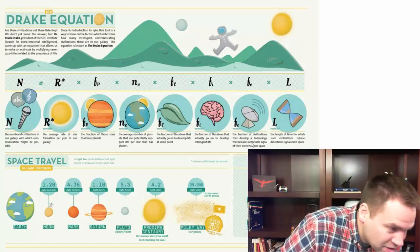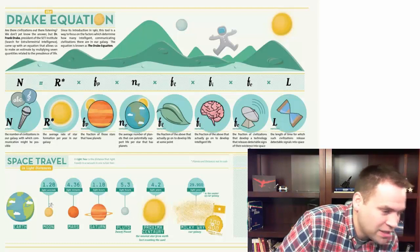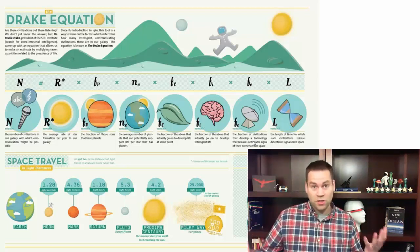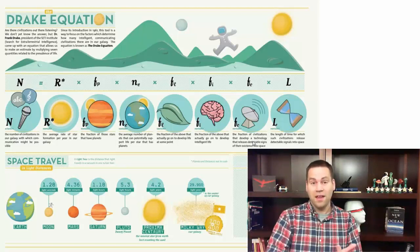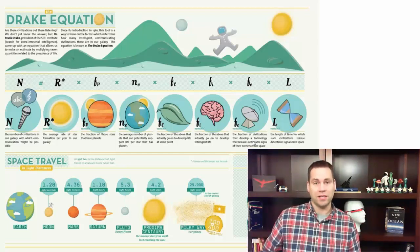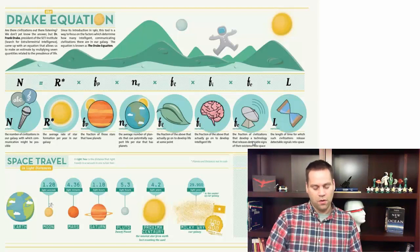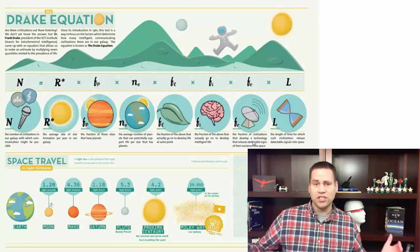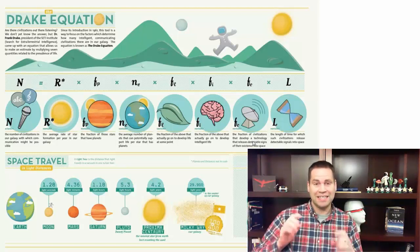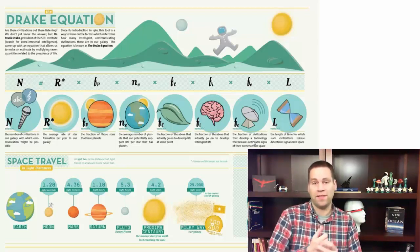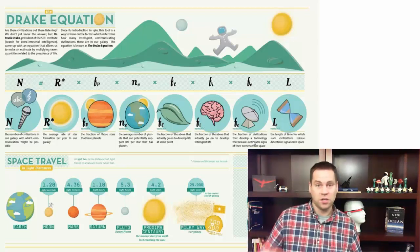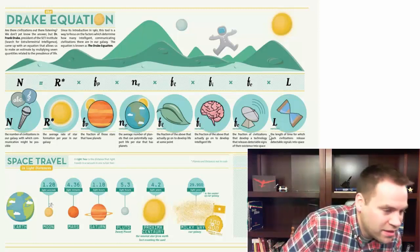Each one of these fractions reduces the number down further. The next is the fraction of civilizations that develop a technology that releases detectable signals into space. Think about the Mayans, Native Americans, or the Roman Empire — very intelligent civilizations that did not have the technology to communicate into space. You could imagine a planet with human-like creatures that never thought it worth developing long-distance communication technology.